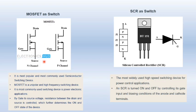MOSFET as a switch: here we have N-channel and P-channel MOSFET. It is the most popular and commonly used semiconductor switching device. MOSFET is a unipolar and very high frequency switching device, most commonly used in power electronic applications. By applying a gate-to-source voltage, the resistance between the drain and source can be controlled, which further determines the ON and OFF state. Whether your MOSFET is ON or OFF will entirely depend upon the gate-to-source voltage.